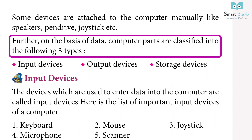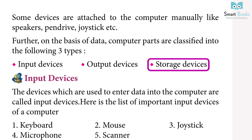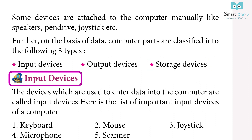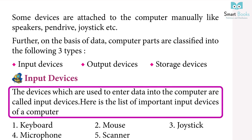On the basis of data, computer parts are classified into three types: input devices, output devices, and storage devices. The devices which are used to enter data into the computer are called input devices.